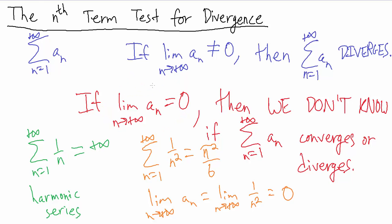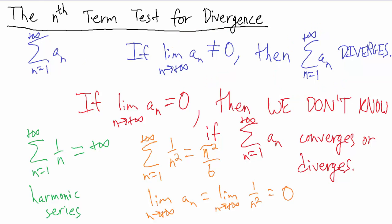The main point of the nth term test is: if you take the limit and get something that's not 0, then you can immediately say the series diverges. So let's see an example of that.